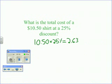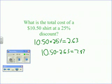This is the discount to be subtracted off the original price. So, $10.50 subtract $2.63 equals $7.87. $7.87 is the total cost.